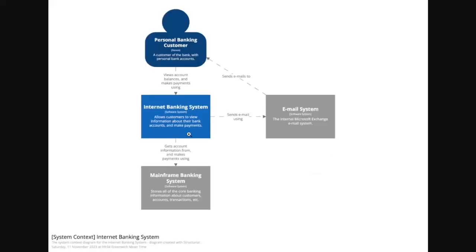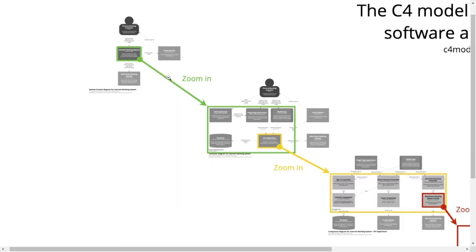We can take a look at an expanded context here. This is the application we are doing a C4 diagram for, and these are all the external systems and users that interact with it. In the big picture, this is represented as a context. Then the application, the internet banking system, is zoomed in, and inside the application are different containers.